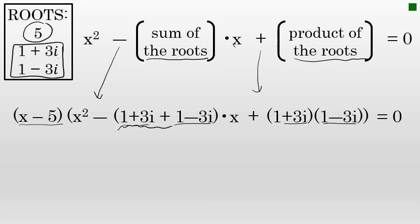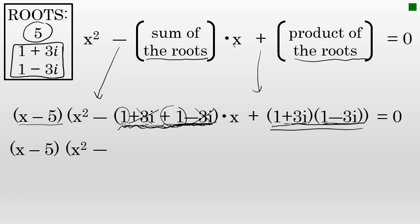The next thing is to simplify the quadratic part. For the sum: 1 plus 3i plus 1 minus 3i — the imaginary terms add up to zero, leaving just 1 plus 1, which is 2. So the first two terms in the quadratic are x² minus 2x.